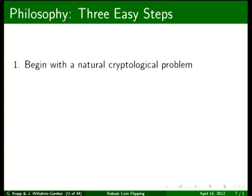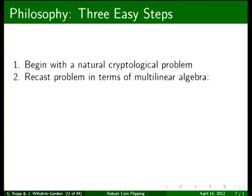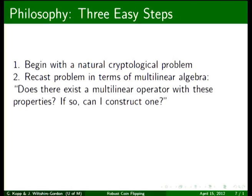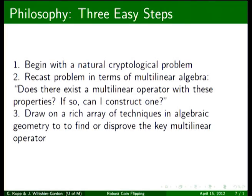This leads me to the philosophy of this talk. You begin with a natural cryptological problem, and in step two, you restate the problem in terms of multilinear algebra. You ask, does there exist this particular multilinear operator? And if such an operator exists, can I find it? And step three is you can then draw on a wide variety of techniques in algebraic geometry to actually produce such an operator or show that it can't exist.